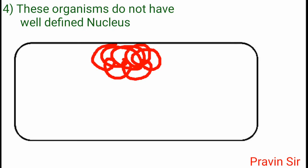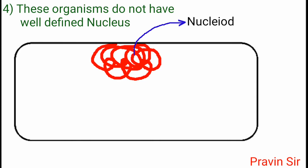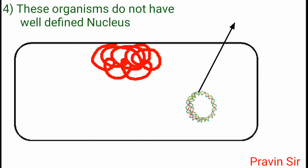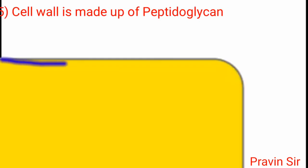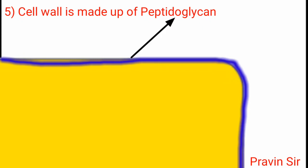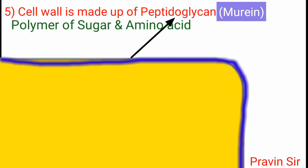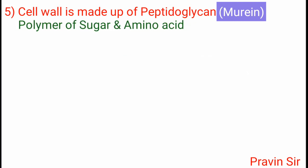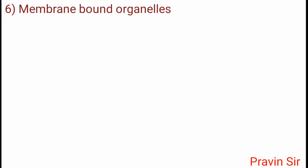These organisms do not have a well-defined nucleus. DNA exists as a simple double-stranded circular single chromosome called the nucleoid. The smaller circular molecule of DNA as an extra-chromosomal genetic element is called a plasmid. The cell wall is made up of peptidoglycans, also called murein, which is a polymer of sugar and amino acids.